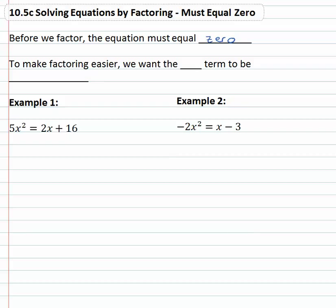So we're going to have to move some terms around from the left side to the right side or the right side to the left side. And to make the factoring easier, we will want the x squared or a squared, whatever the variable is. We want the x squared term to be positive.